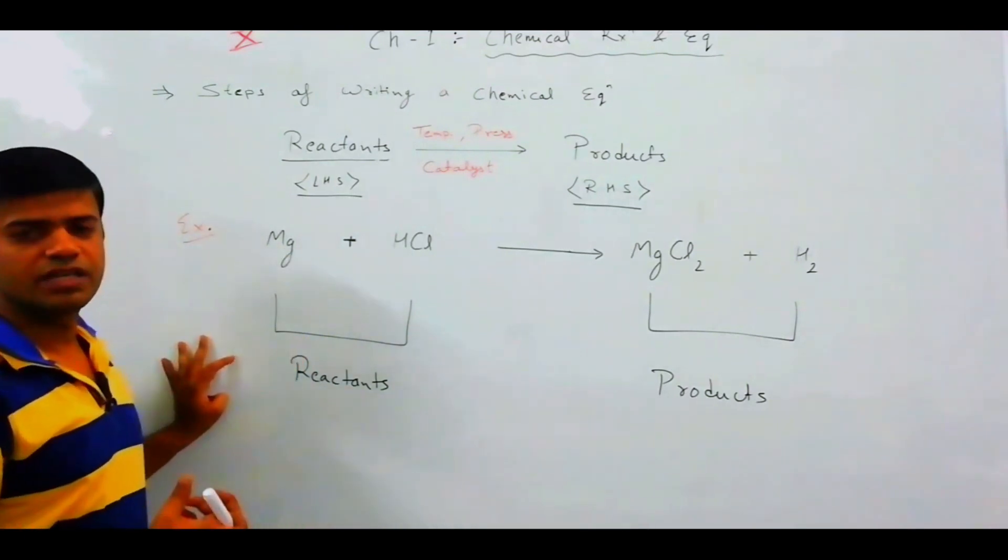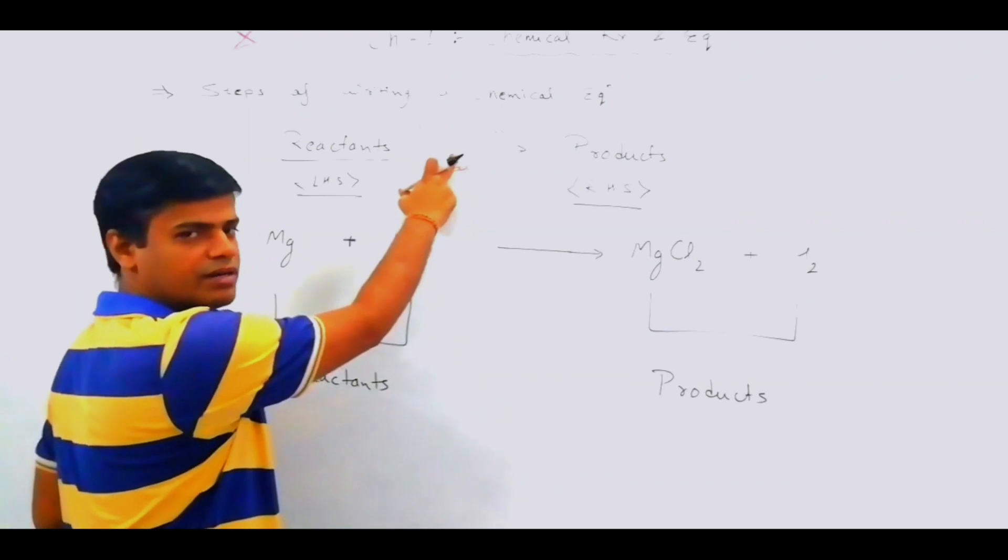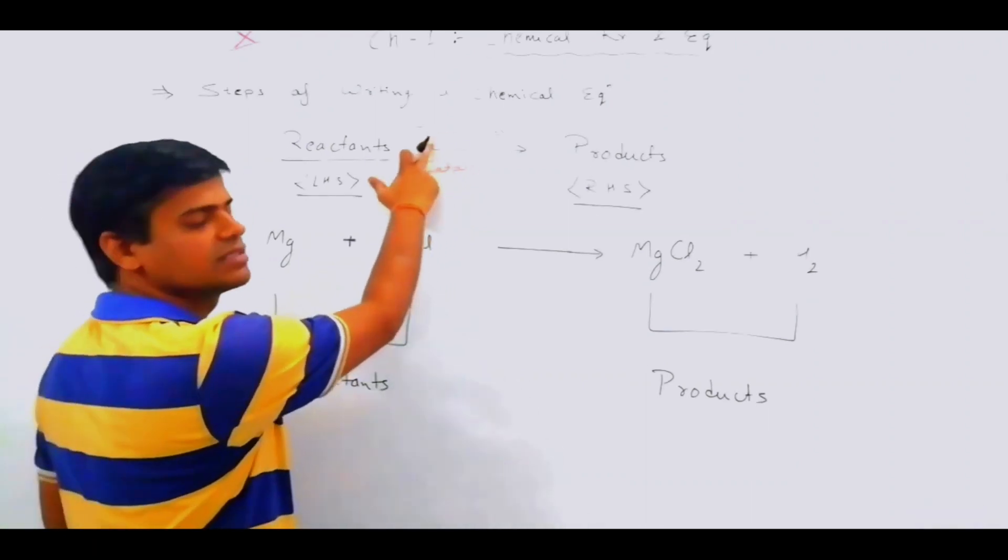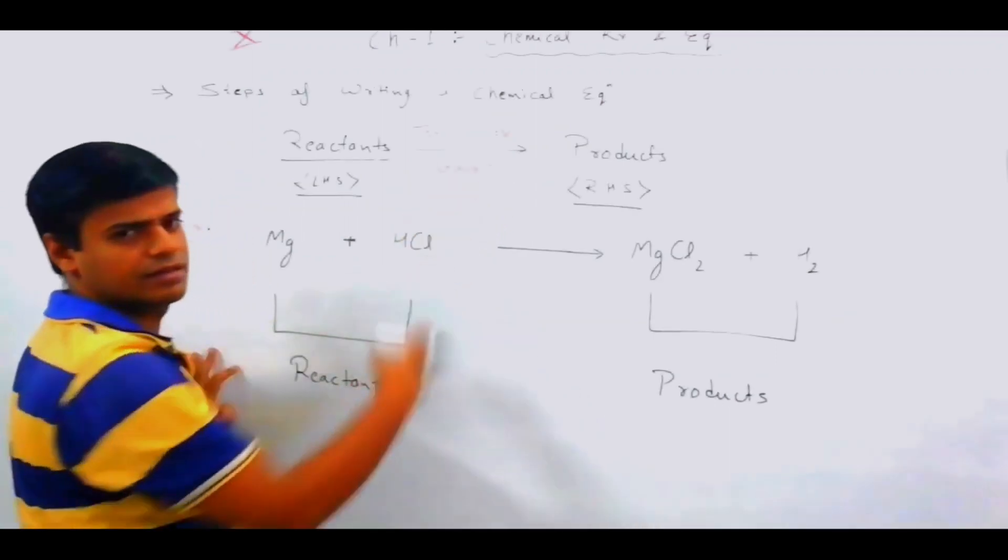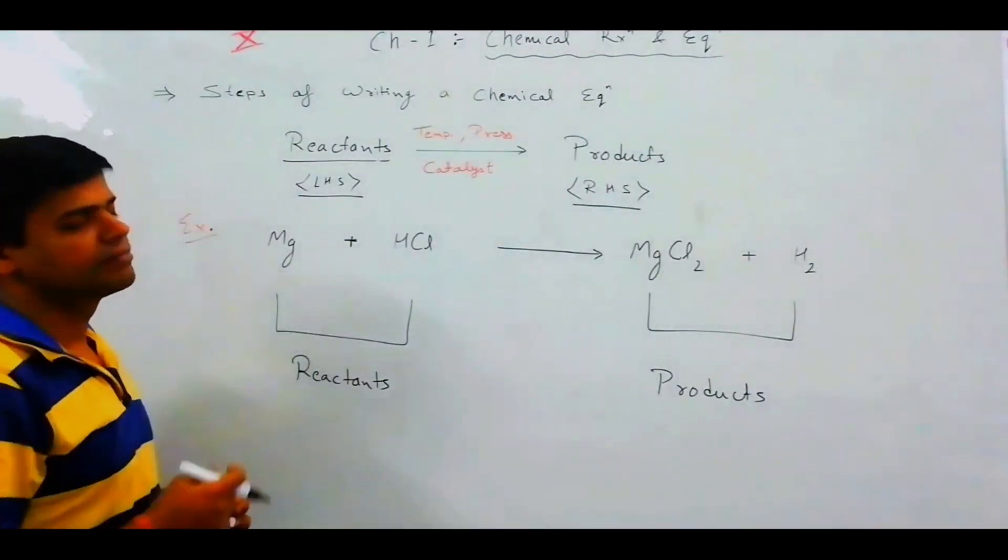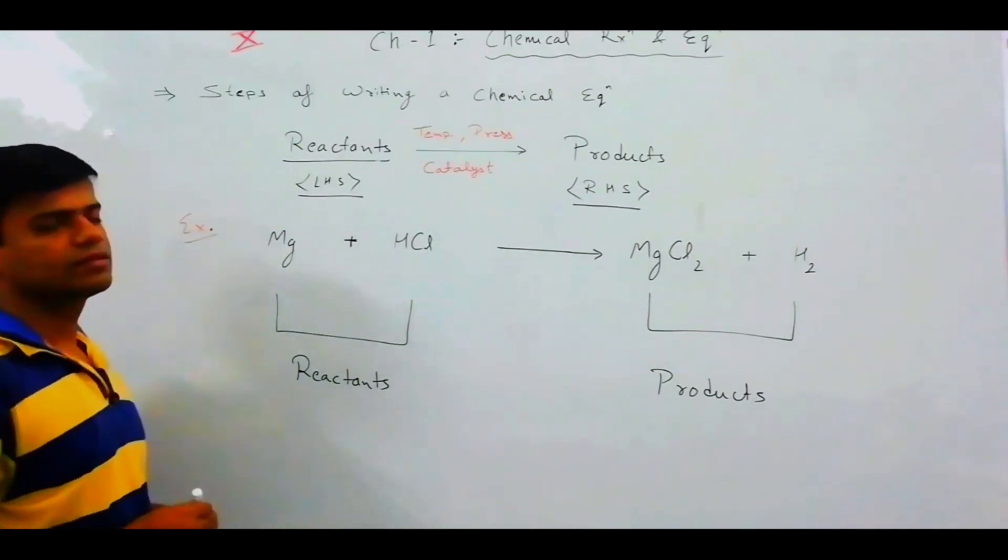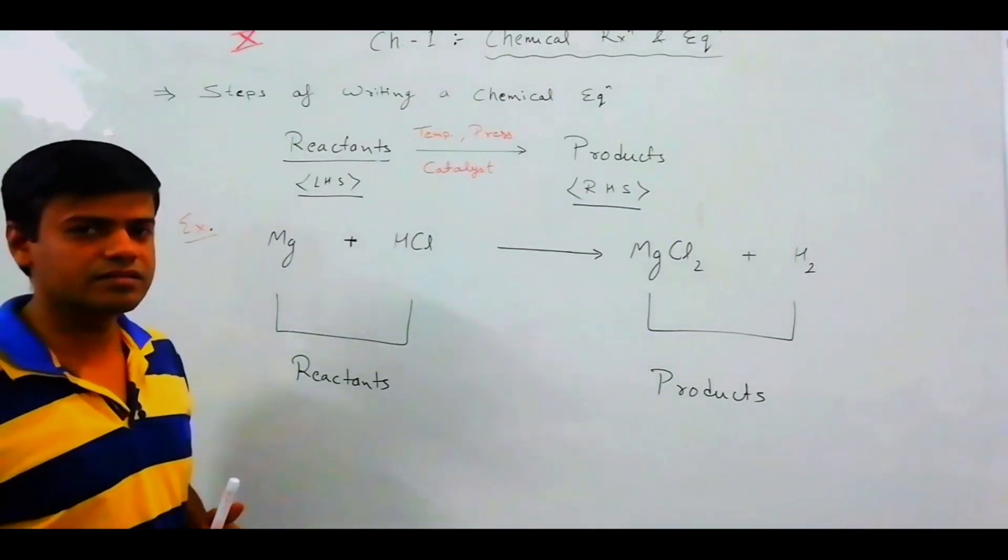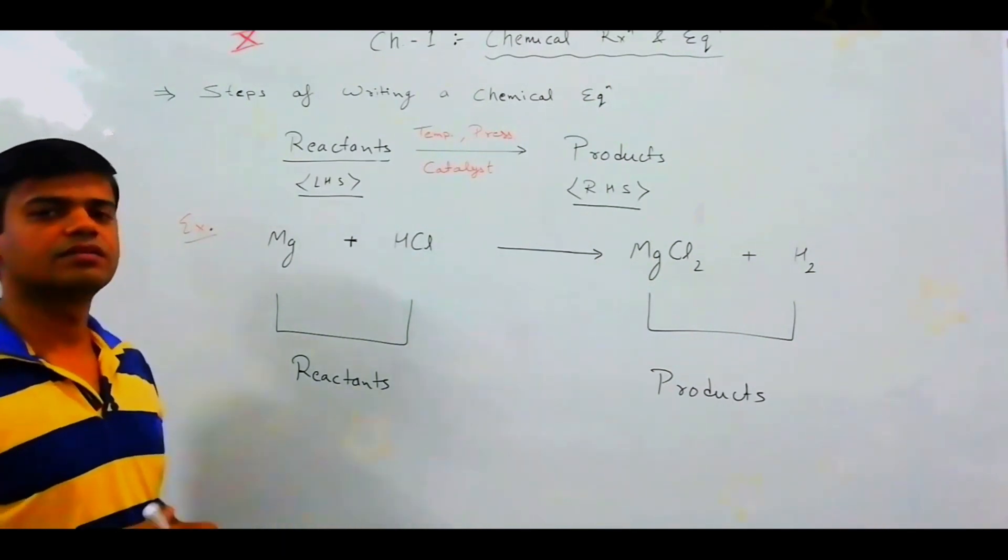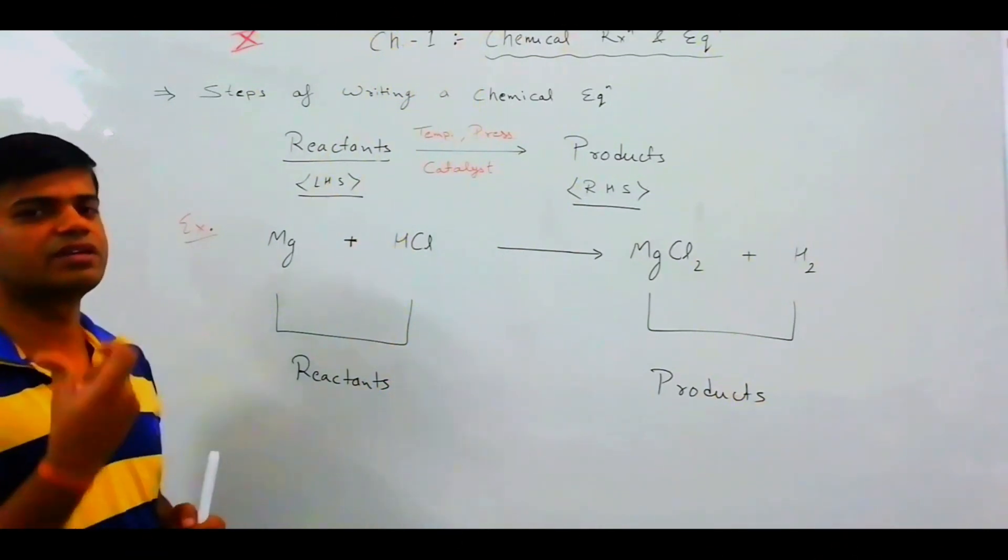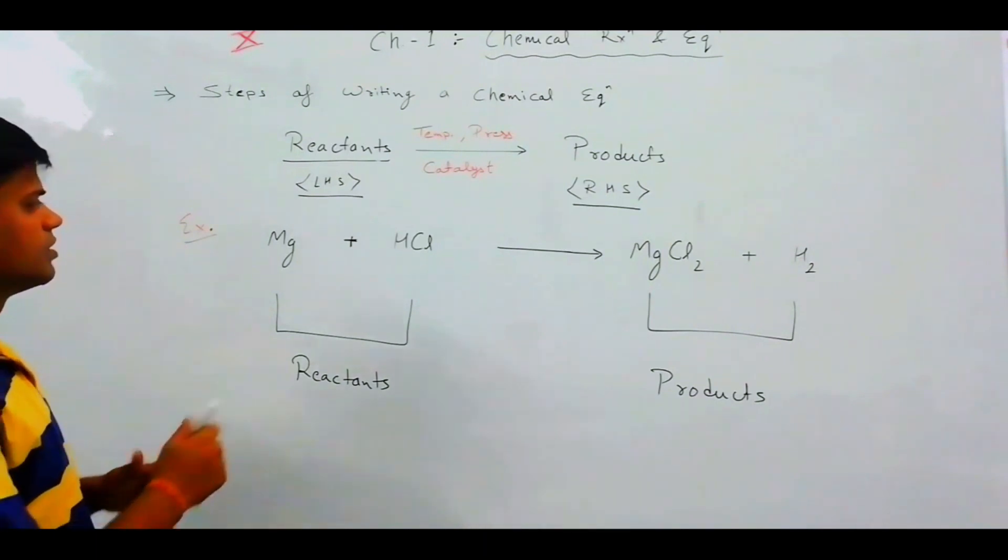After reaction, when you get reactions with conditions, you get conditions above and below the arrow, such as temperature, pressure, catalyst. Temperature, pressure, catalyst. What happens, catalyst is the substance which alter the rate of reaction. So, the rate of reaction is increased and decreased rate of reaction.